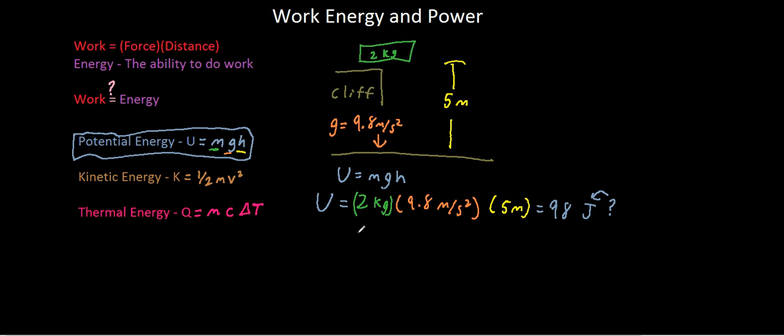And to do that, we need to break down what this formula is. So we first need to point out that U is just the potential energy. And of course, 2 kilograms is just our mass.